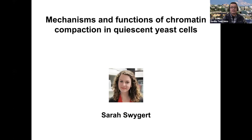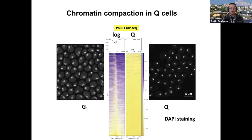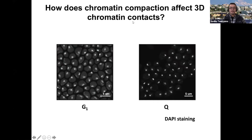Today's talk is about chromatin three-dimensional folding, work done almost entirely by Sarah Swigert, a postdoc in the lab. One of the hallmarks of quiescent cells is compact chromatin. Using DAPI staining comparing G1 cells in mitotic cell cycle versus quiescent state, we reproducibly see about 40% decrease in nuclear volume. This is associated with a huge decrease in transcription. So the question is: if chromatin is so different, how does this affect three-dimensional chromatin folding?